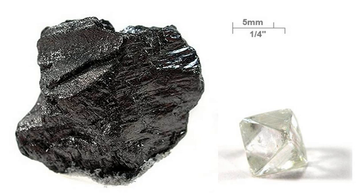Flake graphite is less common and of higher quality than amorphous; it occurs as separate plates that crystallized in metamorphic rock. Flake graphite can be four times the price of amorphous. Good quality flakes can be processed into expandable graphite for many uses, such as flame retardants. The foremost deposits are found in Austria, Brazil, Canada, China, Germany, and Madagascar. Vein or lump graphite is the rarest, most valuable, and highest quality type of natural graphite, and is only commercially mined in Sri Lanka. According to the USGS, world production of natural graphite was 1.1 million tons in 2010, to which China contributed 800,000 T, India 130,000 T, Brazil 76,000 T, North Korea 30,000 T, and Canada 25,000 T. In 2009, 118,000 T of synthetic graphite with an estimated value of $998 million was produced in the United States.